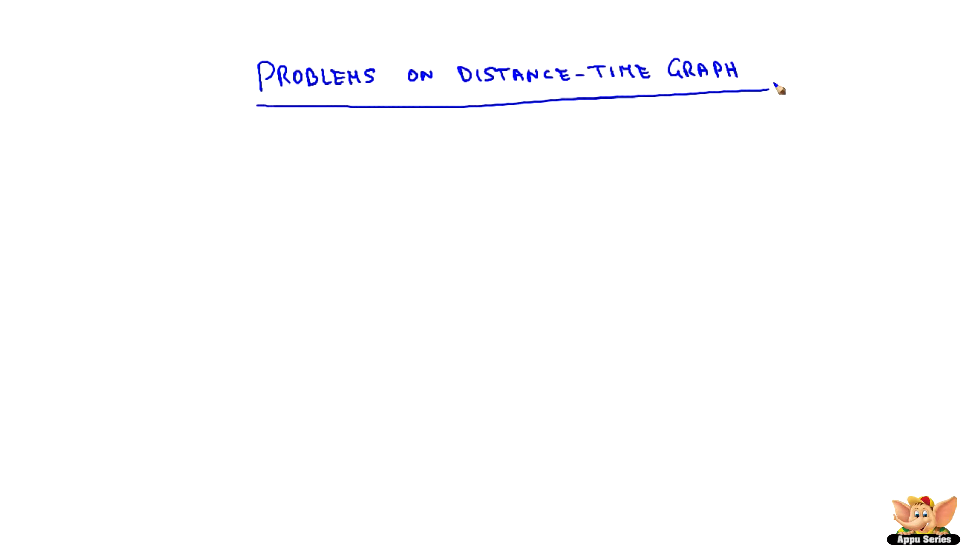Problems on distance-time graph. What is the nature of the distance-time graph for uniform and non-uniform motion of an object?